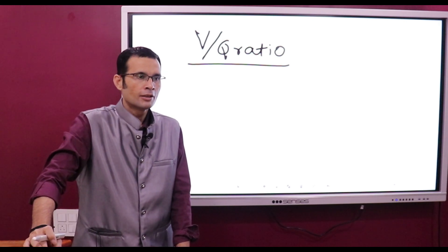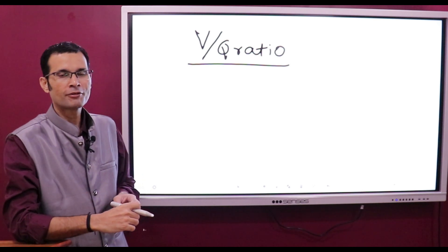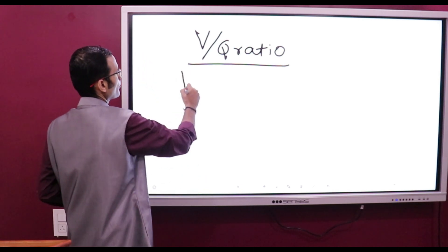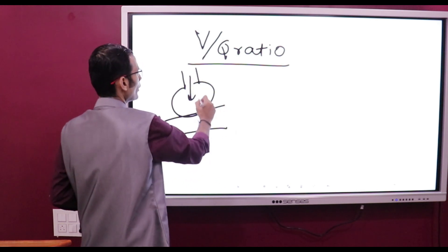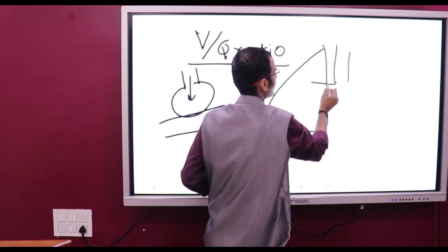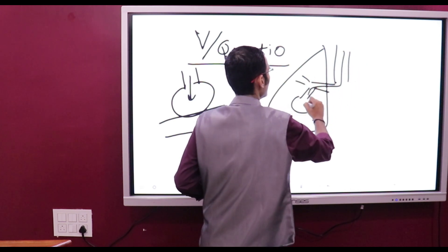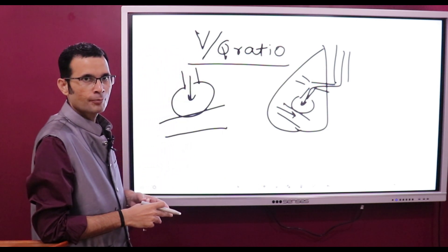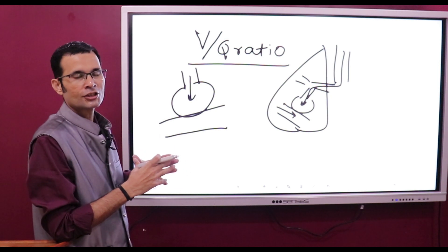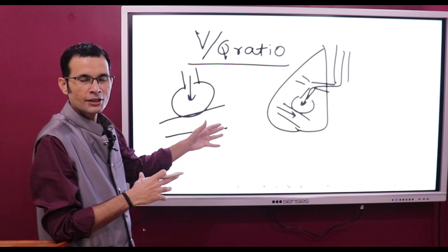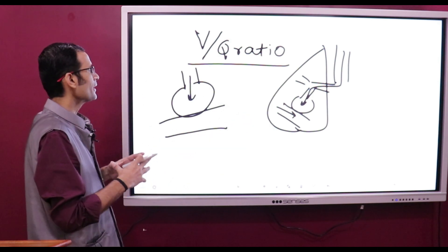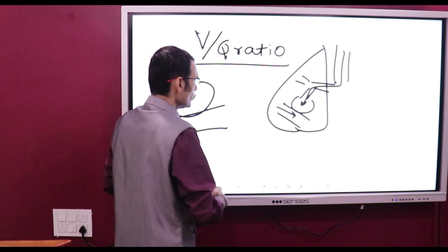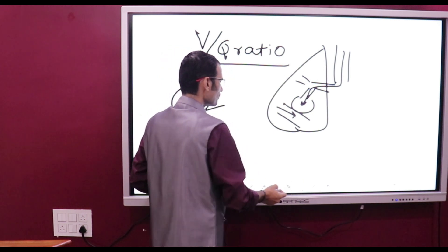Let's discuss a small concept in respiratory physiology — the ventilation-perfusion ratio. There is ventilation of air in the alveoli; the lungs have millions of alveoli with air ventilating in and out. There is also blood perfusion to those alveoli for gas exchange. This ratio of air ventilating the alveoli to blood perfusion is called the ventilation-perfusion ratio, commonly called the V to Q ratio.